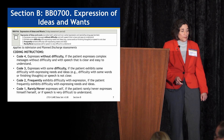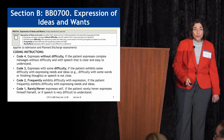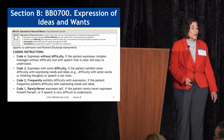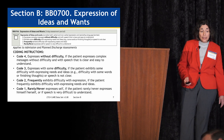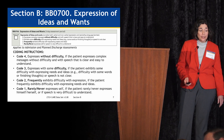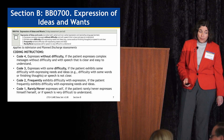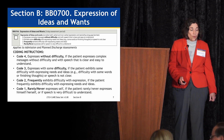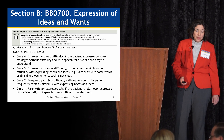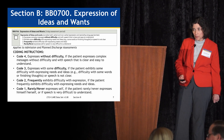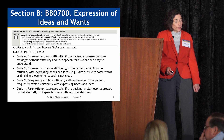For BB0700, expression of ideas and wants, there are four codes for admission and discharge planning assessments. Code 4, expresses without difficulty: the patient expresses complex messages without difficulty with speech that is clear and easy to understand. Code 3, expresses with some difficulty: the patient exhibits some difficulty expressing needs and ideas, or speech is not clear. Code 2, frequently exhibits difficulty with expression: the patient frequently exhibits difficulty expressing needs and ideas. Code 1: rarely or never expresses themselves.